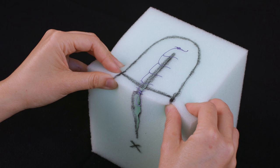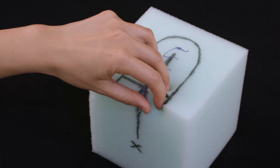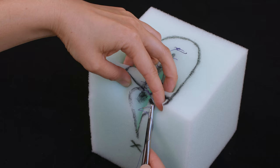After completing the vaginal layer, we will close the deep layers using interrupted sutures. First, place the crown stitch. This re-approximates the bulbocavernosis muscle and rebuilds the perineal body.